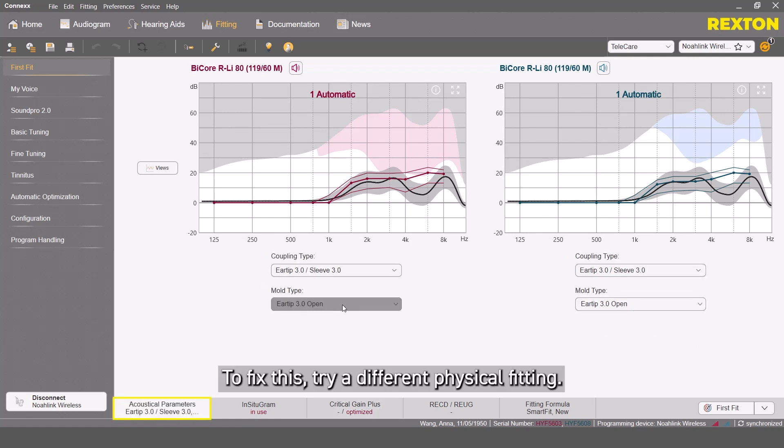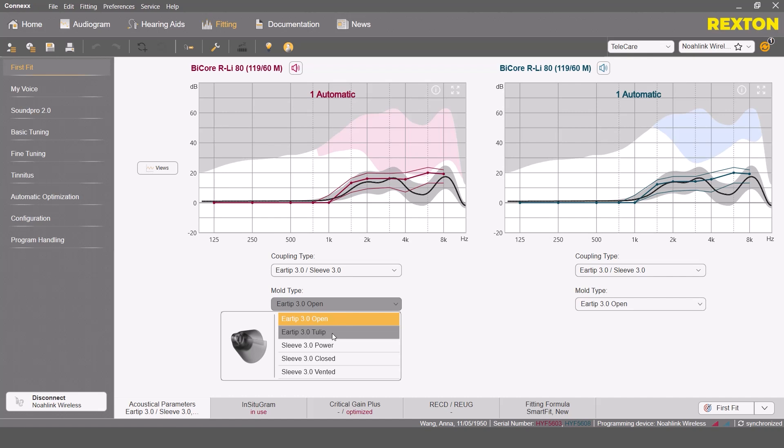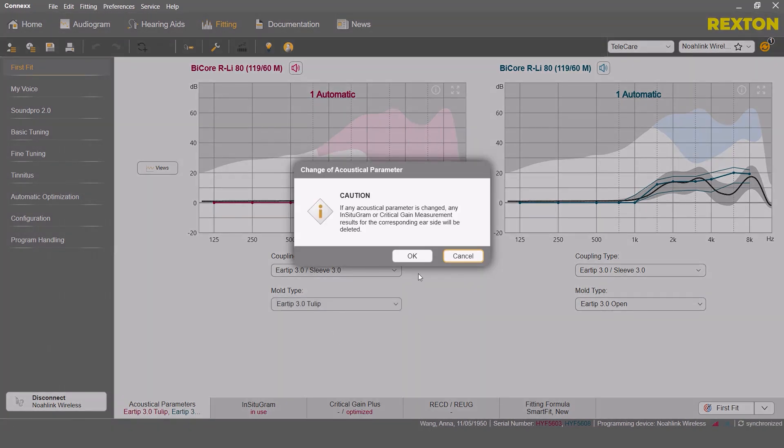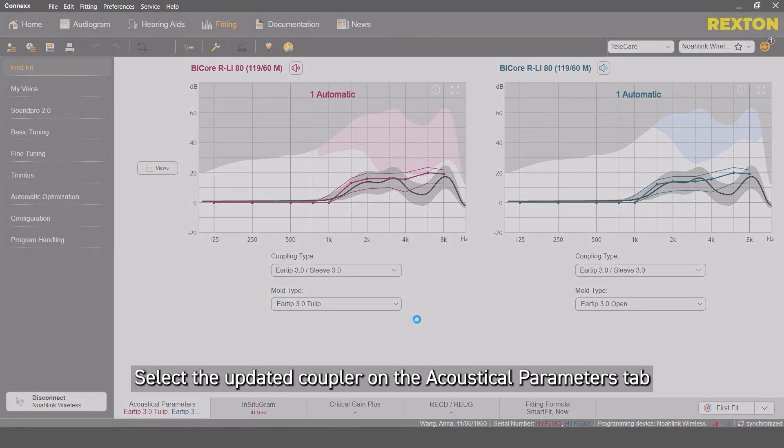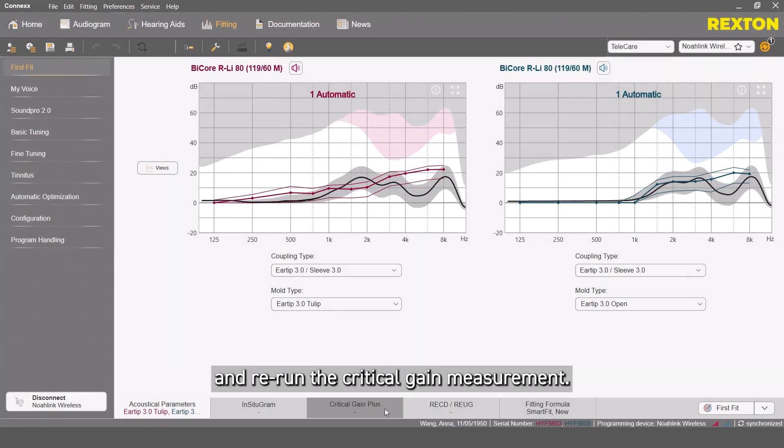To fix this, try a different physical fitting. Select the updated coupler on the Acoustical Parameters tab and re-run the critical gain measurement.